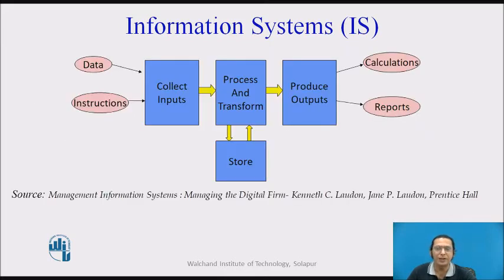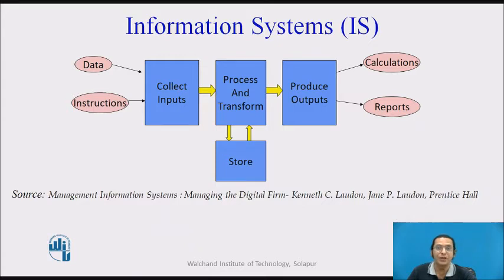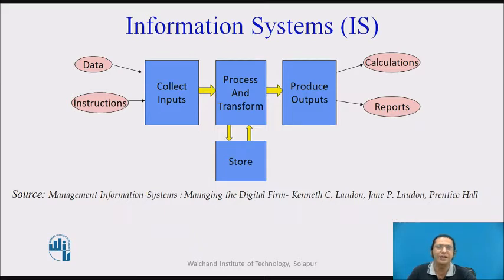Graphically, the information system can be represented as follows. The information system collects data as input, which is processed according to instructions. There is processing to convert the data into information or knowledge, which can be stored for later use or used directly to produce output. The output may be in terms of calculations, reports, recommendations, suggestions, or decisions — all happening using digital devices.